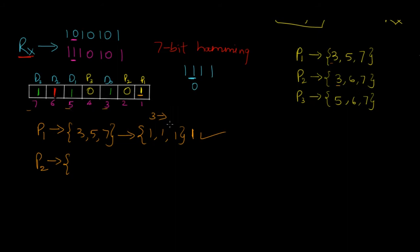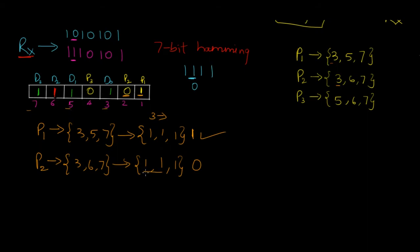For P2, he checks positions 3, 6, and 7. Position 3 is 1, position 6 is the flipped bit (received as 1), and position 7 is 1 — so three ones. The received P2 is 0. Since we use even parity but have three high bits (odd), P2 should have been 1, not 0. There is an issue — error detected at P2.